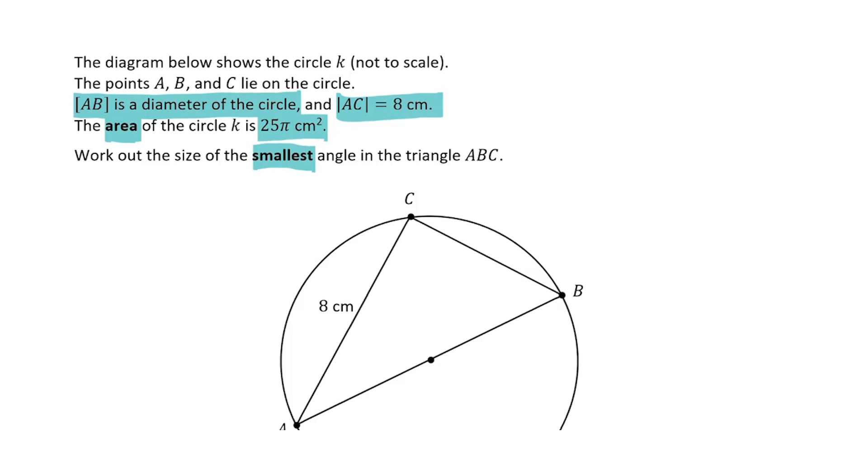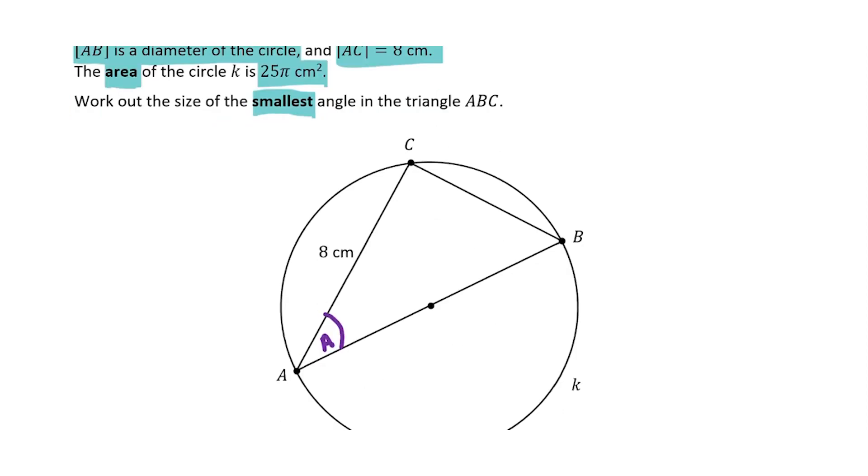By eye you can see that this angle here is going to be the smallest. I'm just going to call that A and that is what we are looking for. So we are told that the area of the circle is 25π centimeters squared. I'm going to use this to find out the length of the radius.